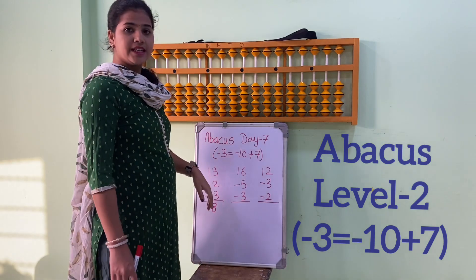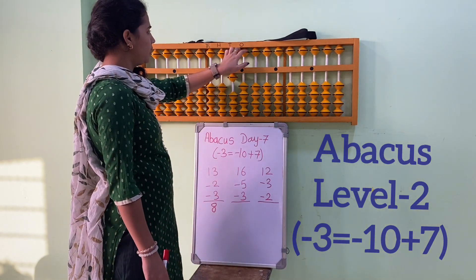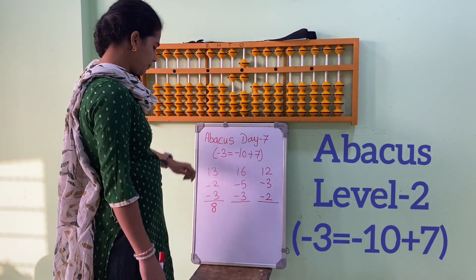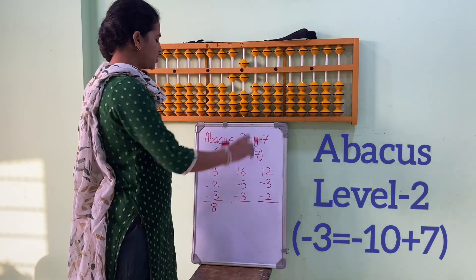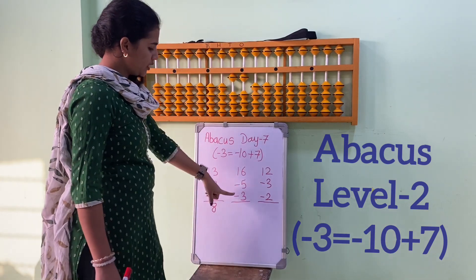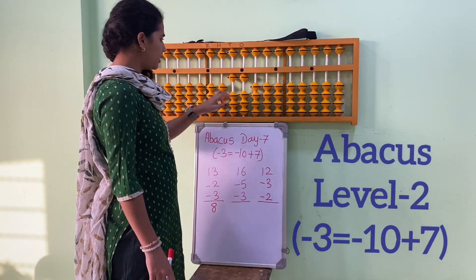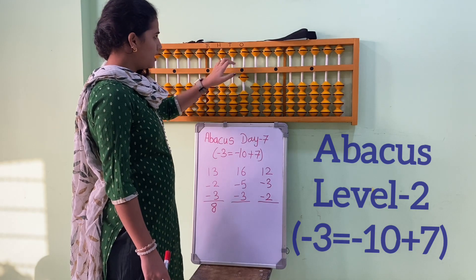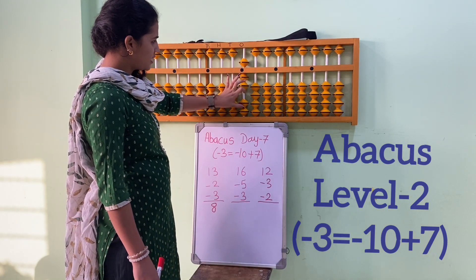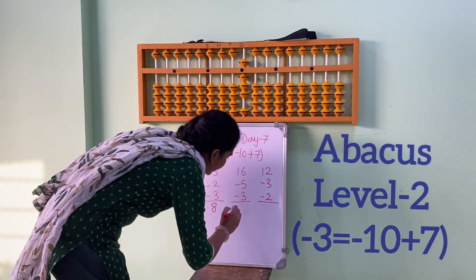Let's see the next sum. First number is 16. 1, 5, 6, 16, minus 5. So we have minus 5. Now minus 3. So minus 3 ka formula kya hai? Minus 10 plus 7. 5, 6, 7. So the answer is 8.